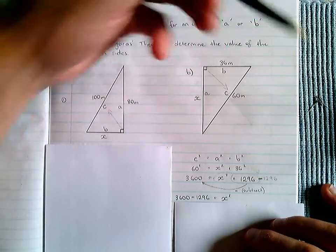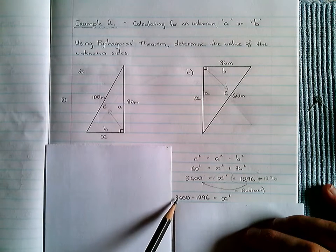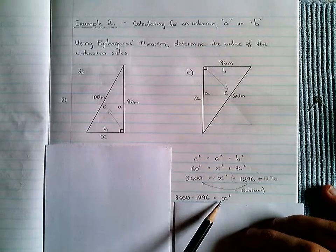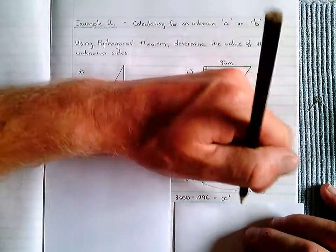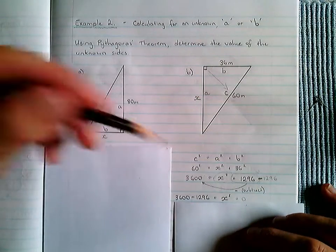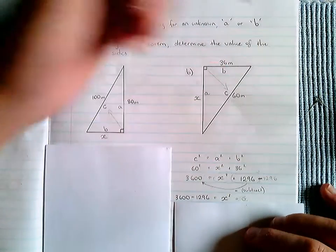And what we're left with is this, 3,600, take that 1,296, gives us the X squared. And as I said previously, you could write plus 0, but there's no point to it, because 0 is nothing, so it doesn't change the result.